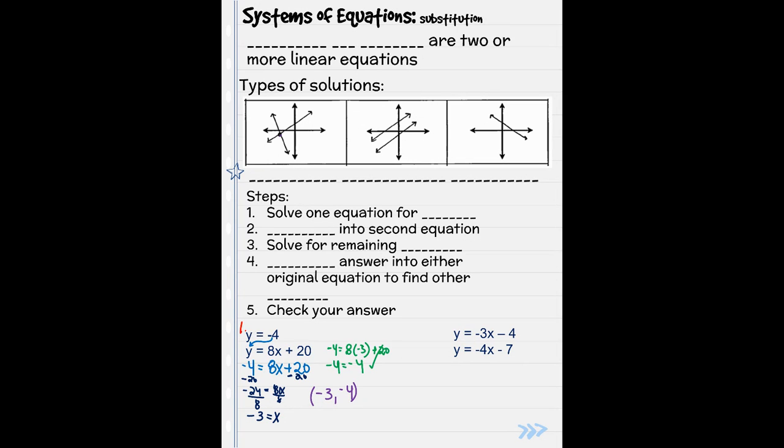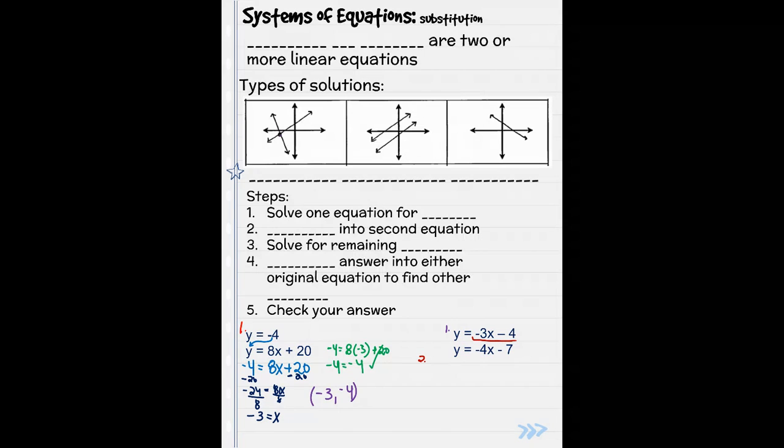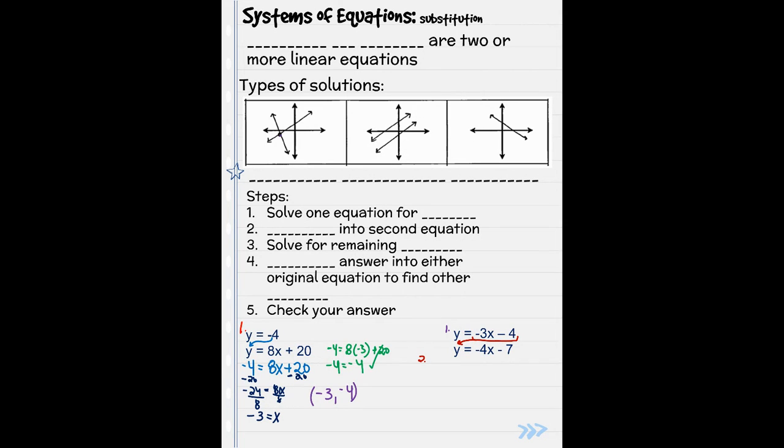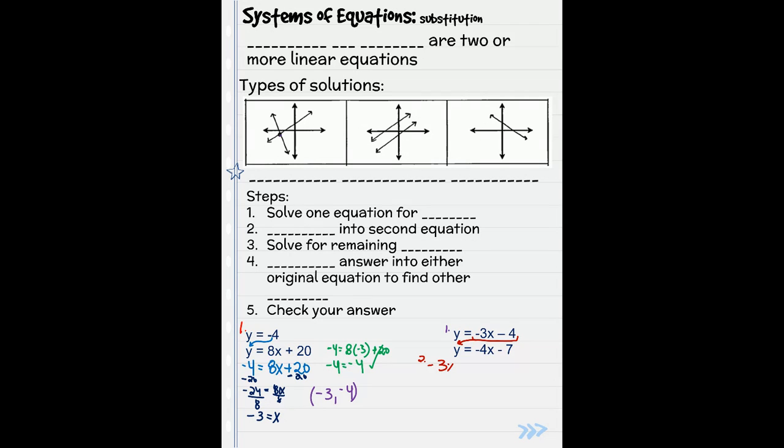Let's move on. Problem 2. Step 1, solve one equation for a variable. Well, they're both solved for y. So step 1 is again done for us. So let's move on to step 2. I am going to plug this whole equation in for y. So negative 3x minus 4 equals negative 4x minus 7.